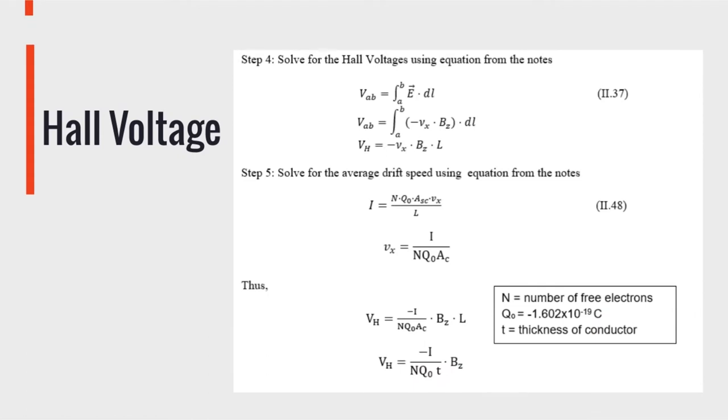To find this hall voltage, we use the electric field that we just derived in an equation from the notes on page 2.37. Integrating this value, we get that the hall voltage is equal to the negative drift speed times the magnetic flux in the z direction times the length. Now to solve for this drift speed, we use an equation on page 2.48 from the notes. And so we get that the hall voltage produced is directly related to the magnetic flux. That is why this voltage can vary depending on how far the magnet is to the sensor.